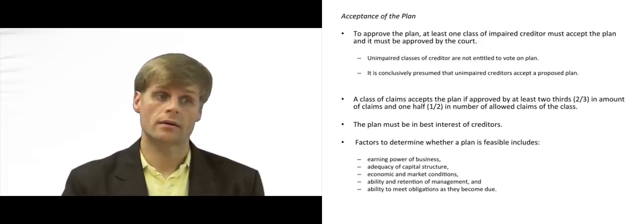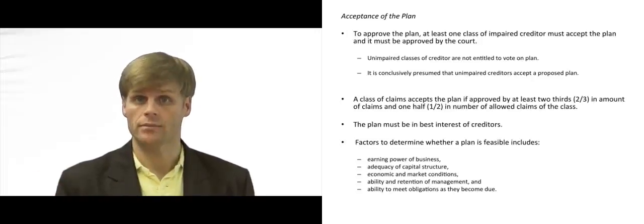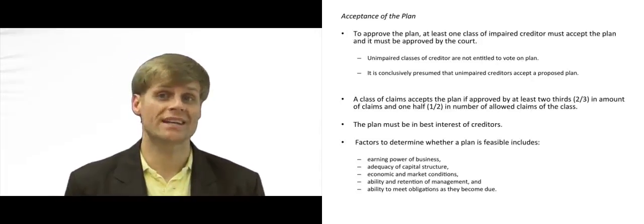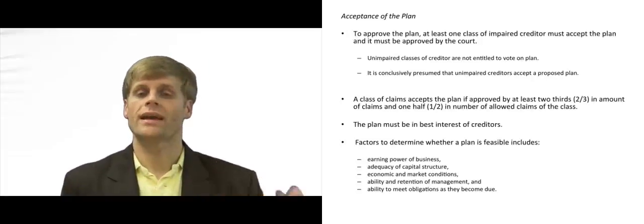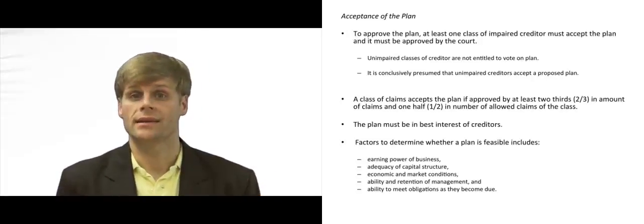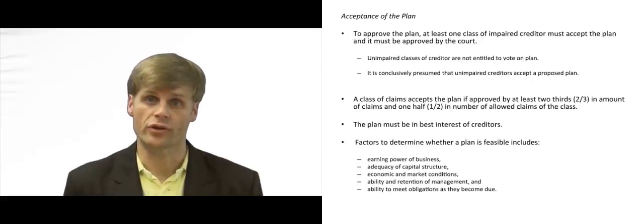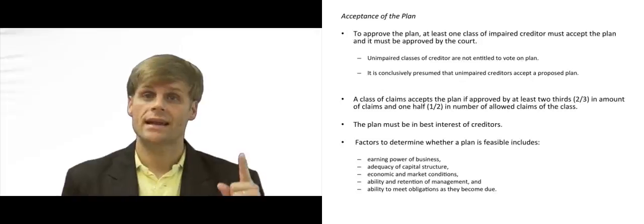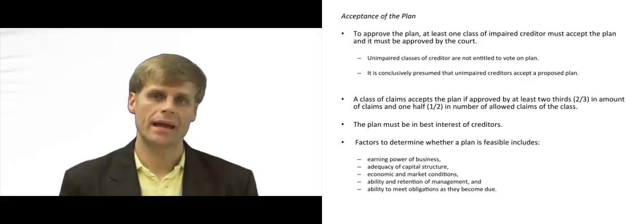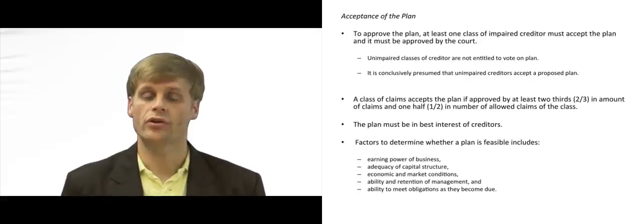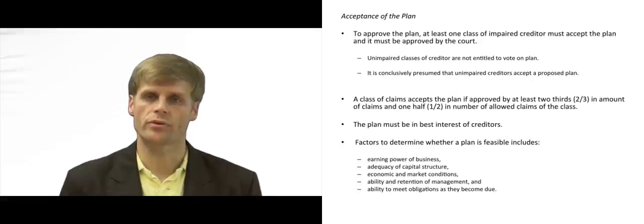Unsecured creditors who are going to receive no dividend and no payment pursuant to the plan are assumed to have rejected the plan. With that in mind, the plan is submitted to unsecured creditors for a vote. The requirement is that at least one class of unsecured impaired creditors must vote to approve the plan.